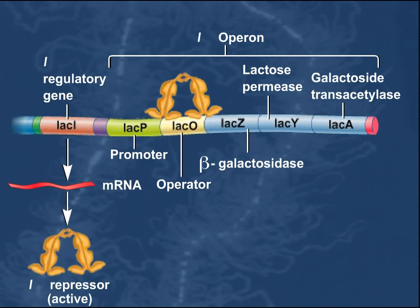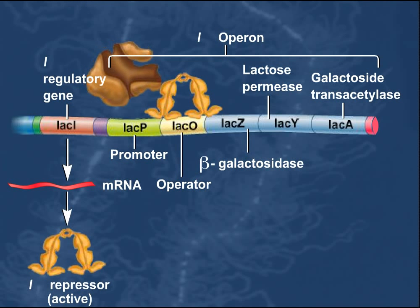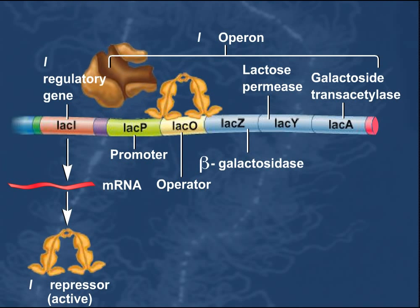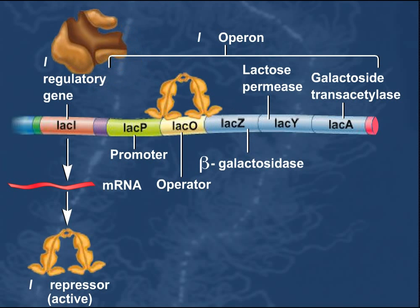When the LAC-Repressor is bound to the LAC-Operator site, RNA polymerase is prohibited from recognizing the LAC-P promoter, and the LAC-Z, LAC-Y, and LAC-A genes are not transcribed.